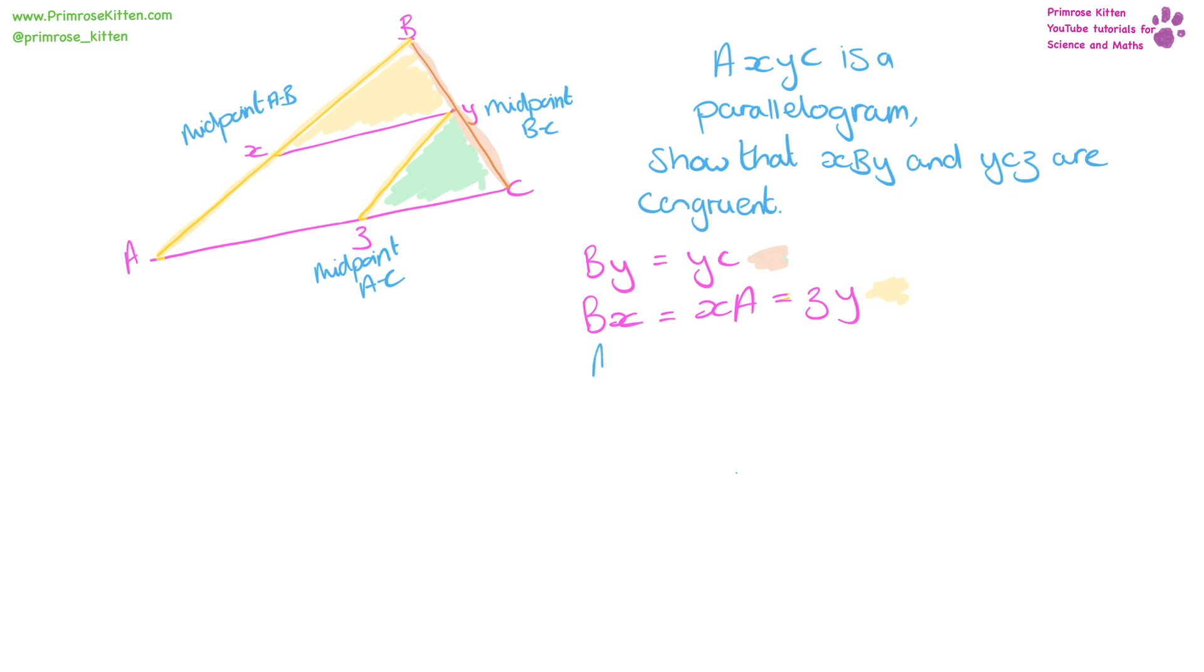We can say that AZ is equal to ZC. So that line there is the same as that line there. And then we can say, because opposite sides of the parallelogram, that AZ is also equal to XY. So that gives us that line there.